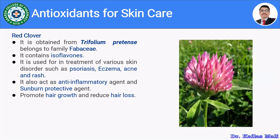The third antioxidant is red clover. It is obtained from Trifolium pratense, belonging to family Fabaceae. It contains mainly isoflavones and is used for the treatment of various skin disorders such as psoriasis, eczema, acne and rash. It also acts as an anti-inflammatory agent and sun protective agent, so it may be present in sunscreen preparations. Furthermore, it promotes hair growth and reduces hair loss, so it might be in hair care products also.